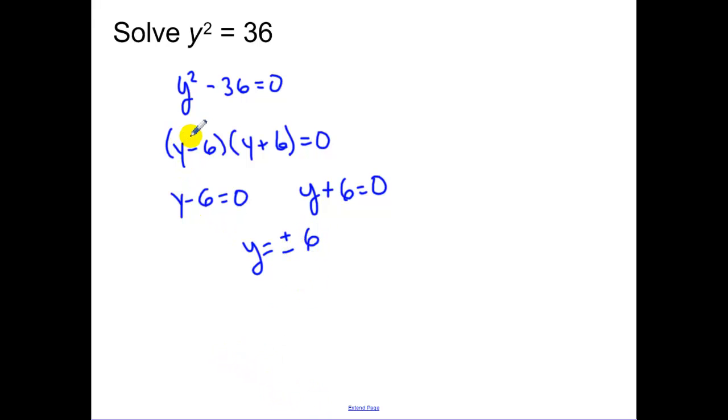Now keep in mind, what we could have also done here, which might be a little bit more of an efficient method, is square root of both sides. But again, remember, whenever we square root both sides, you need to have plus or minus. That plus or minus is what students often forget. So I got the same answer essentially two different ways.